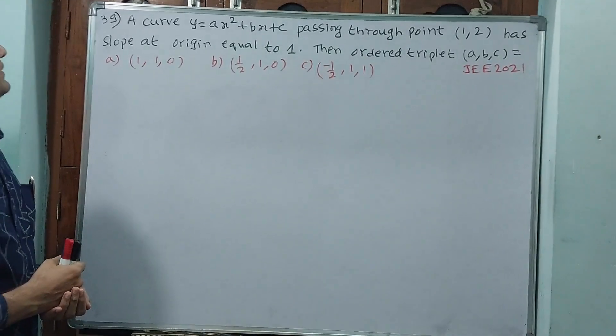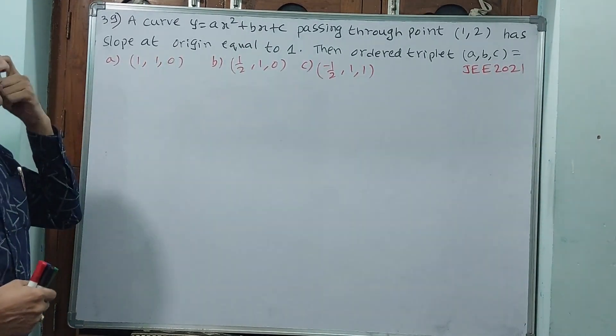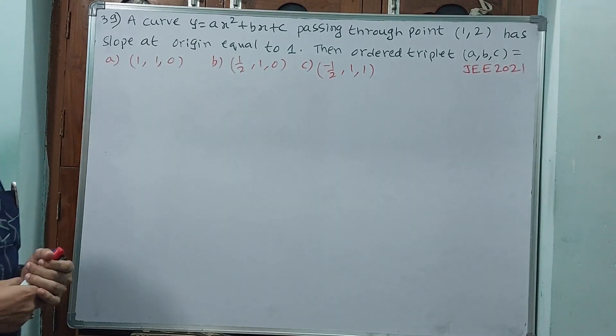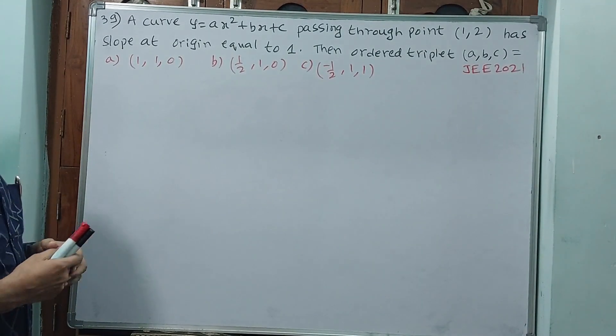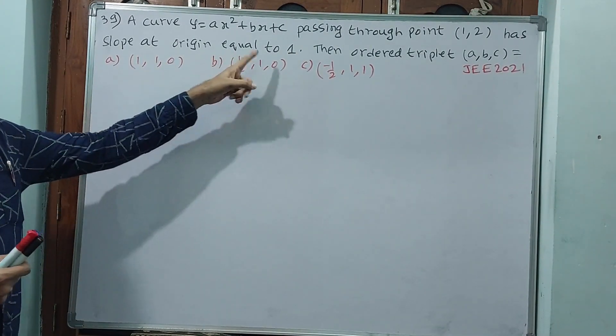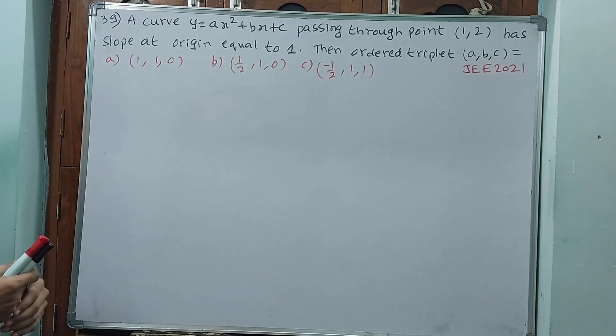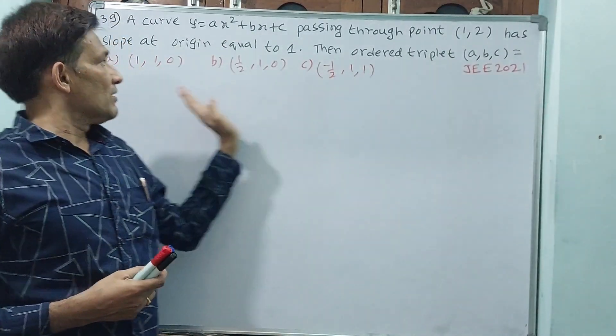Question number 39: A curve y = ax² + bx + c passing through point (1,2) has slope at origin equal to 2. Then ordered triplet (a, b, c) is what?